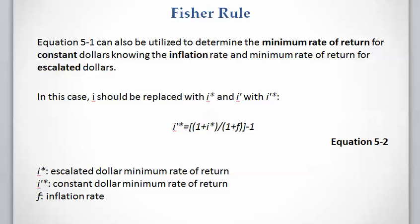The Fischer rule can be used to convert any escalated dollar rate to the constant dollar rate using the inflation rate. For example, we can calculate the minimum rate of return for the constant dollar given the inflation rate and the minimum rate of return for the escalated dollar. We rewrite the equation as equation 5.2, where I star is the escalated dollar minimum rate of return, I prime star is the constant dollar minimum rate of return, and F is the inflation rate.